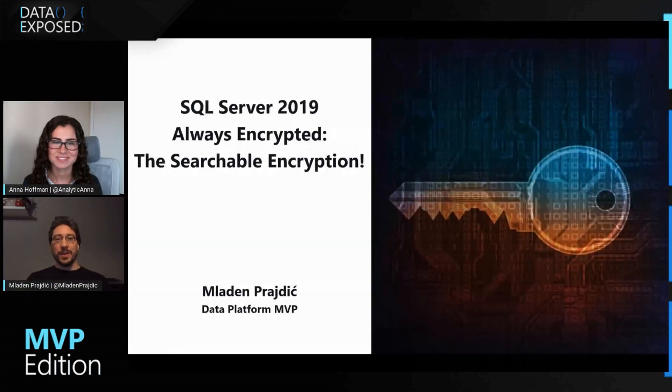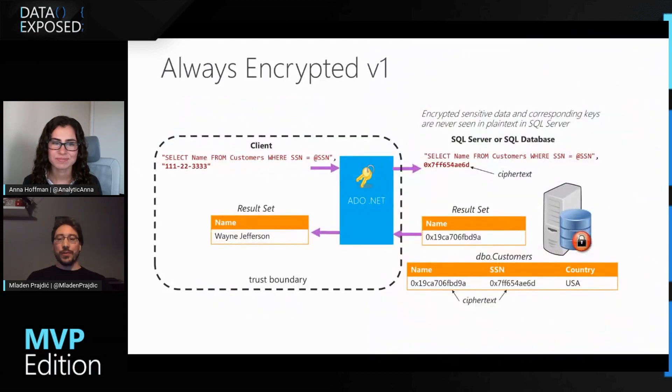I like that simple explanation — very helpful and relevant. Now today we're going to go deeper into this topic. I'm going to pass it to you and let you teach us how Always Encrypted works and what are some of the things we need to know. Okay, cool. So we'll take a look at a few slides. So Always Encrypted in SQL Server 2019 — I call it searchable encryption, because that's basically what it is. We'll first look at how Always Encrypted version one works.